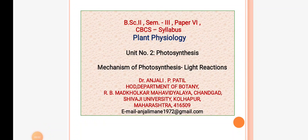In semester three, paper number six, CBCS syllabus, is plant physiology. In unit number two is photosynthesis. Today we will see about the mechanism of photosynthesis — light reactions.